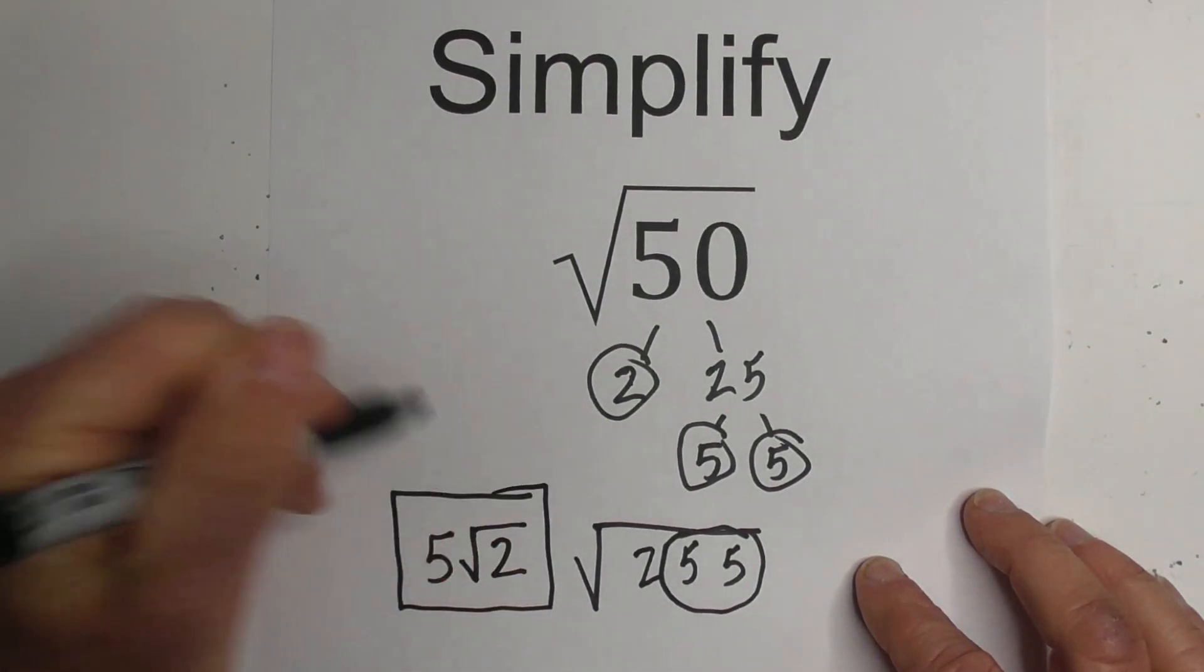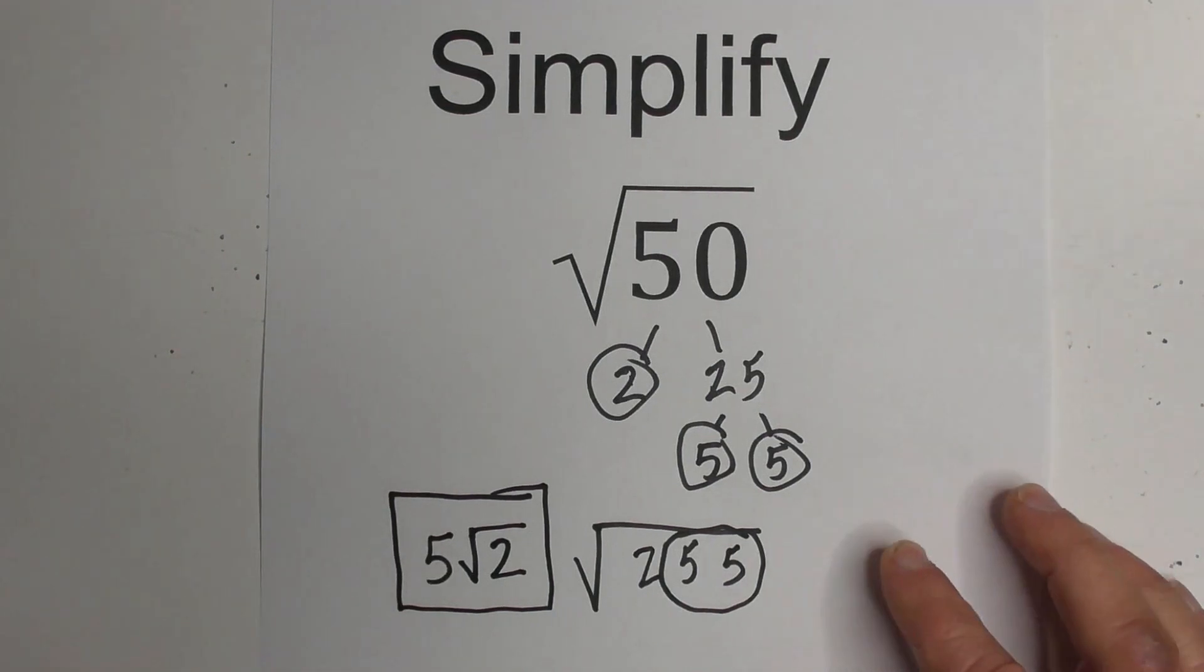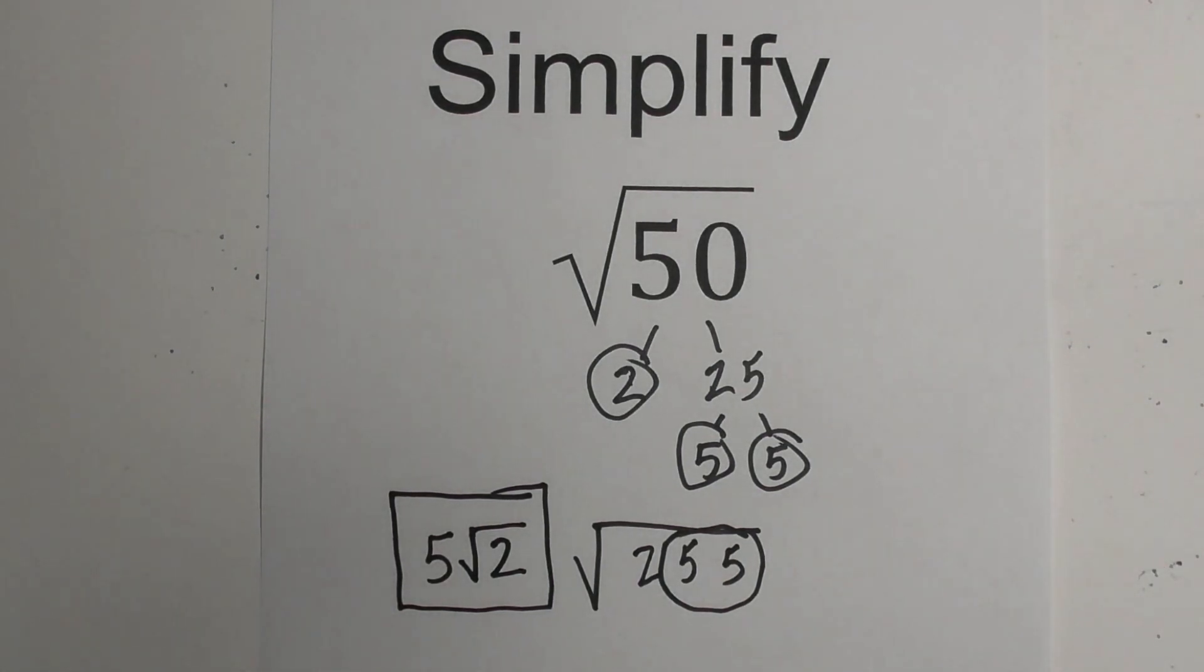So the square root of 50 simplified is 5 times the square root of 2. I hope that was helpful.